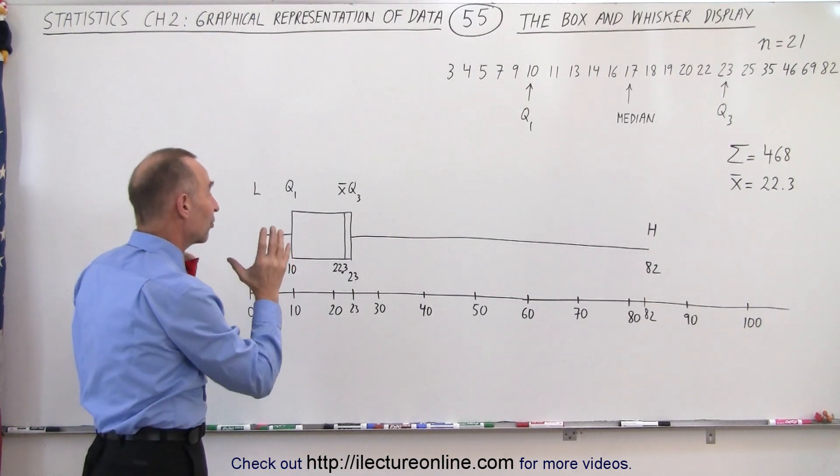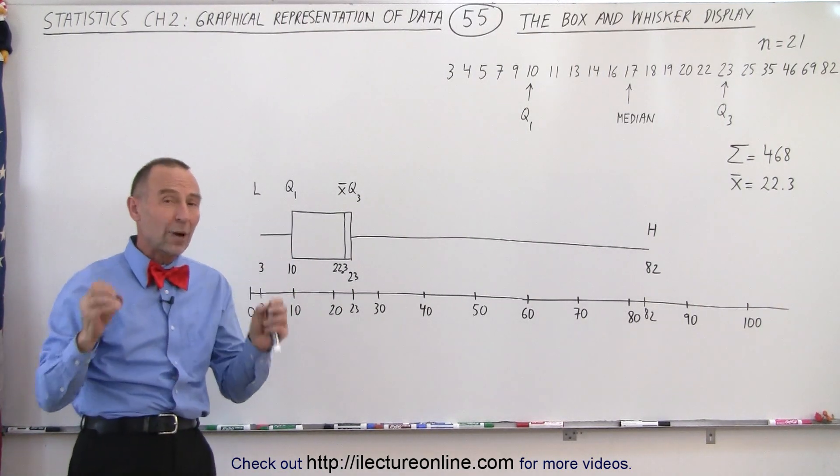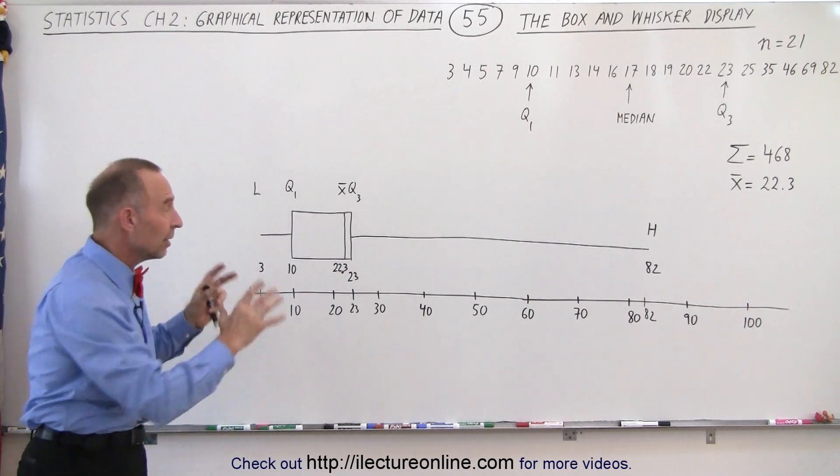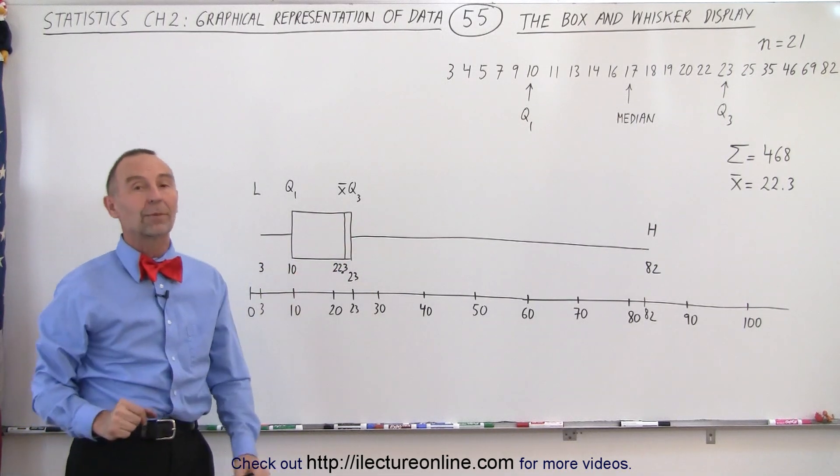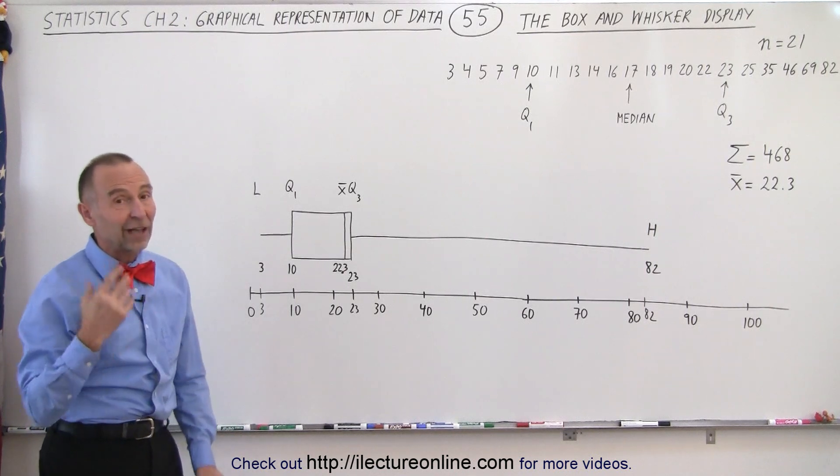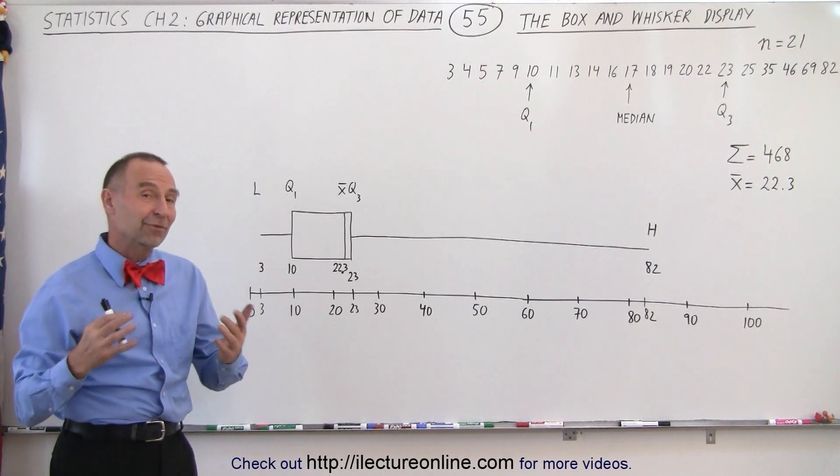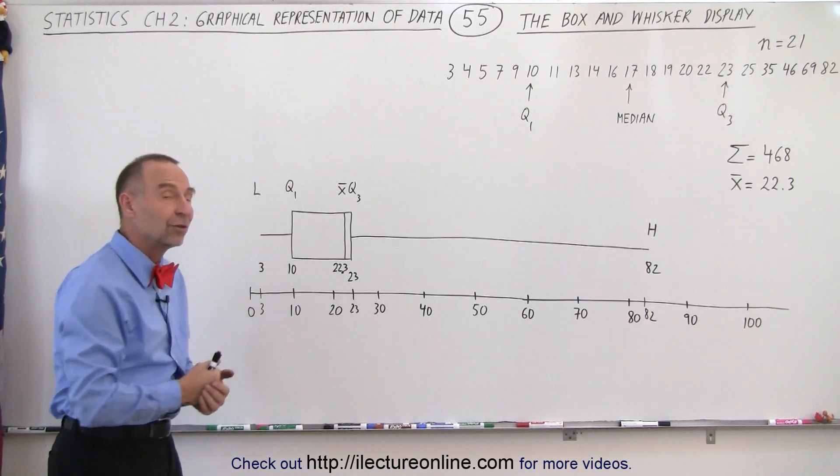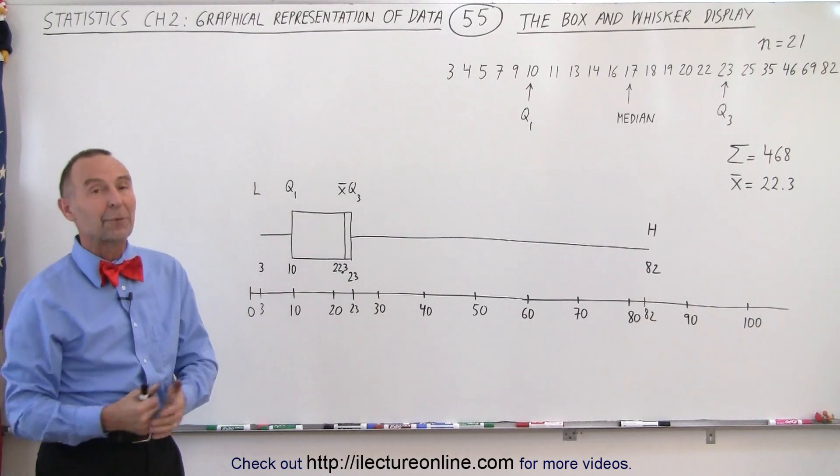And so you can see that the box and whisker display gives you a very quick, reasonably accurate idea about how the data is distributed, and that's why this kind of display is actually quite nice and very important in our ability to quickly figure out what is going on with the data.